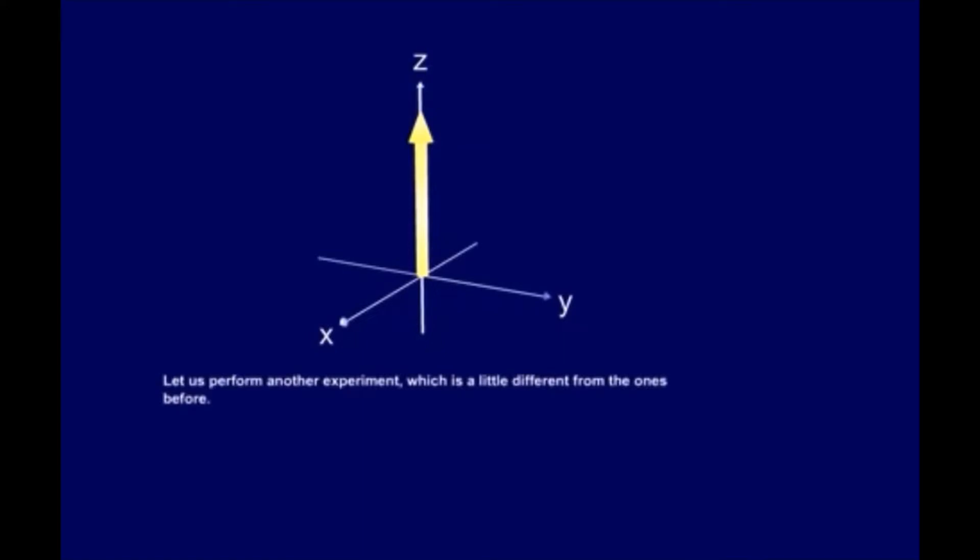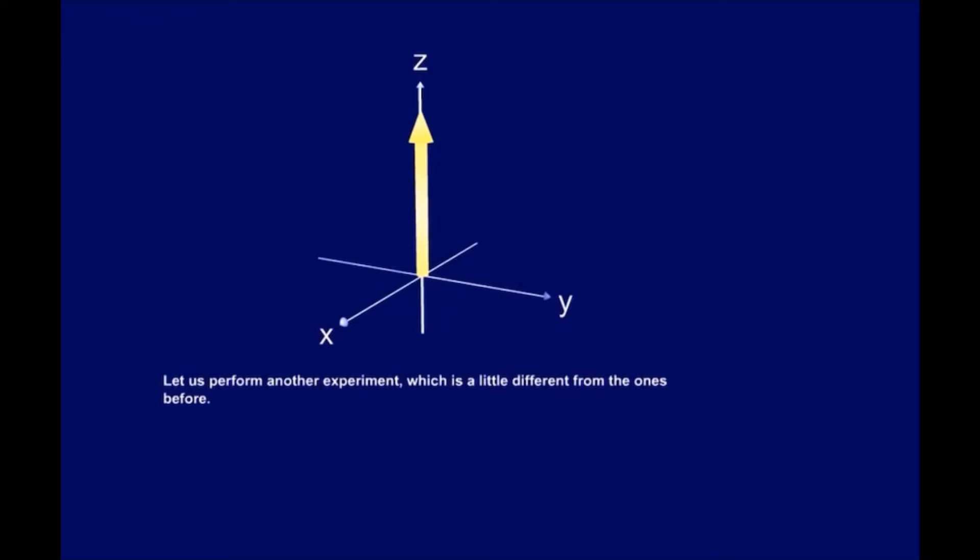Let us perform another experiment, which is a little different from the ones before. First, we use a 90-degree pulse. The longitudinal magnetization is tilted. We get a transversal magnetization.